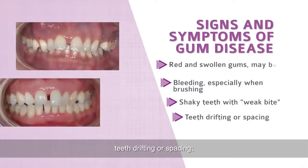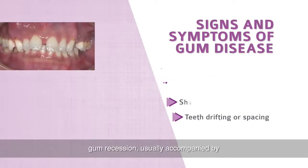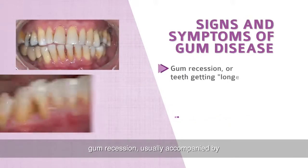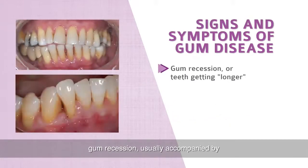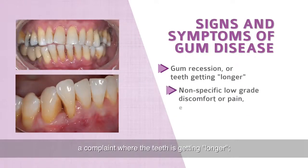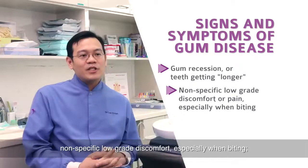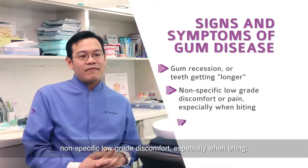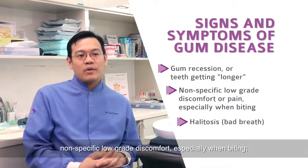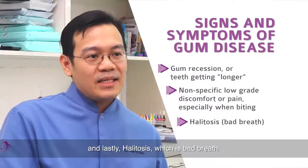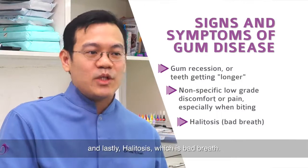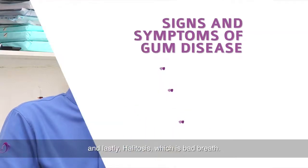Additional symptoms include teeth drifting or spacing, gum recession usually accompanied by a complaint where teeth are getting longer, non-specific low-grade discomfort especially when biting, and lastly halitosis, which is bad breath.